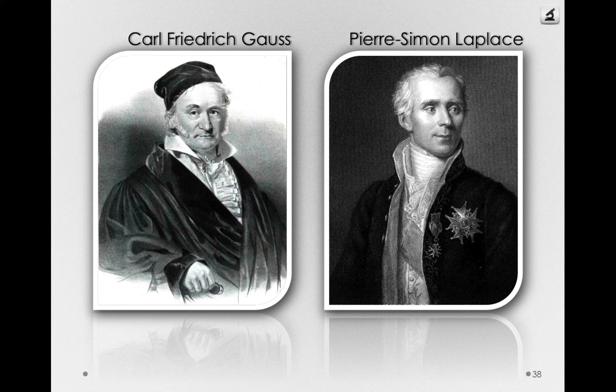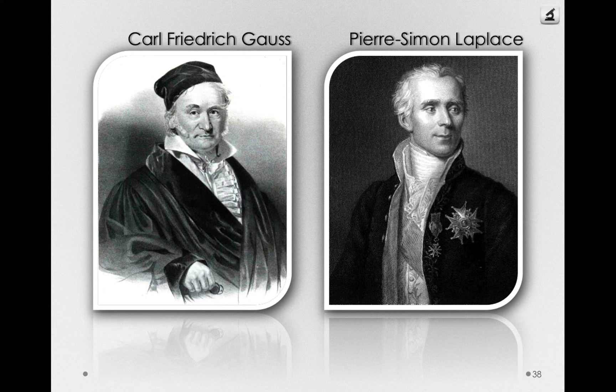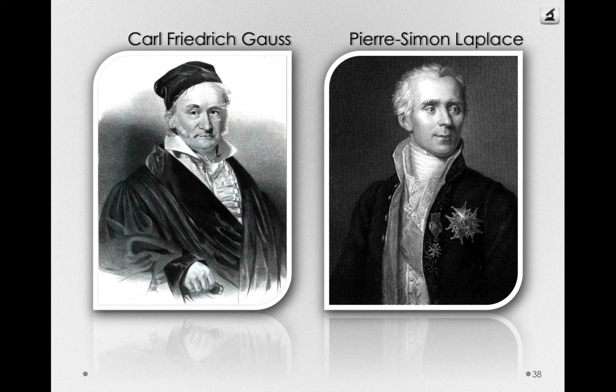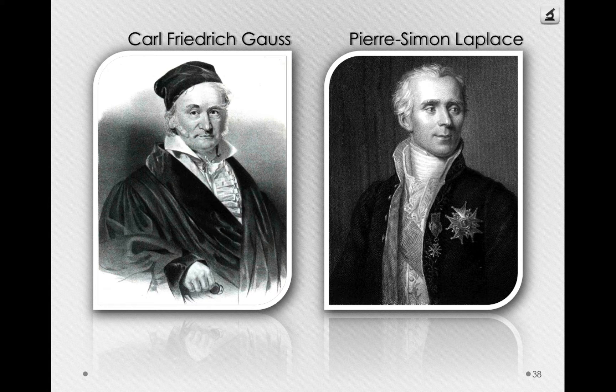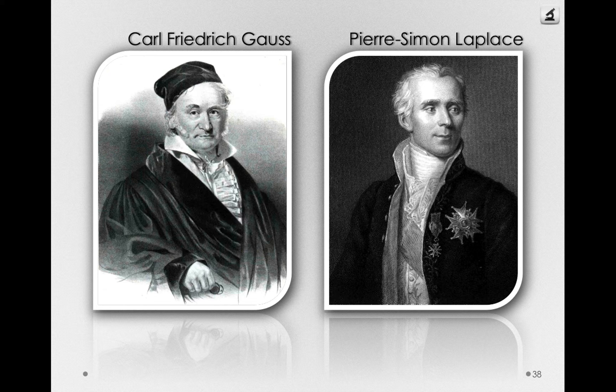Pierre Simon Laplace was no slouch himself. He was an astronomer and also a mathematician. Remember, statistics and astronomy have a long history. Arthur Eddington was also an astronomer. Remember, he was the one who argued with Fisher about the estimation of the population quantity of variability.